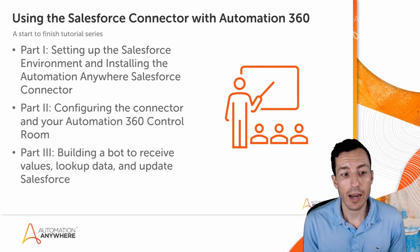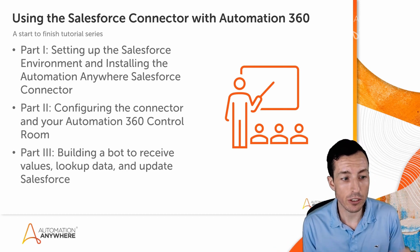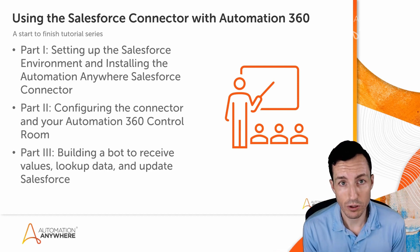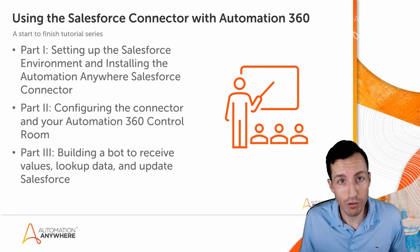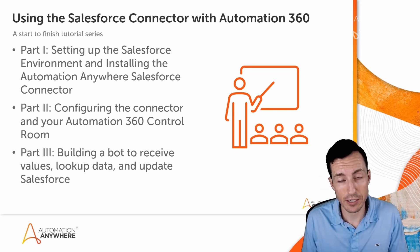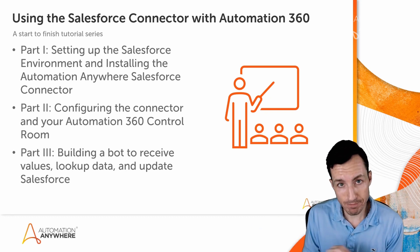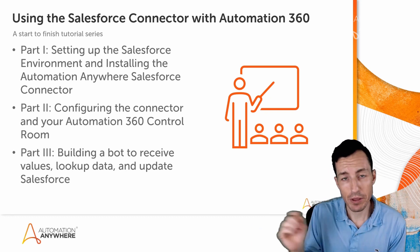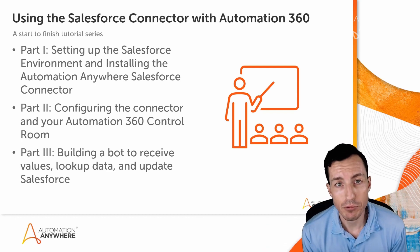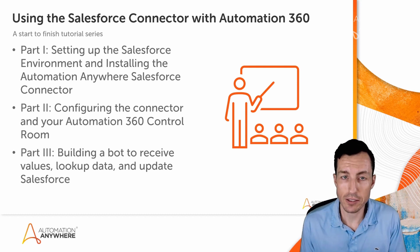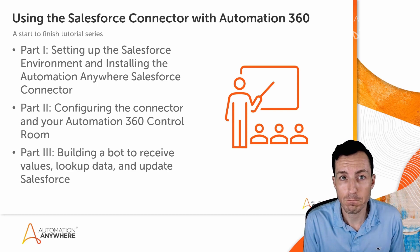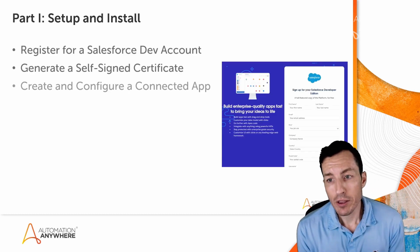The third part is the culmination of everything combined — we'll build a bot that receives values, does a lookup for data, and then updates data in Salesforce. We'll configure the bot on the Salesforce connector side, build the full bot, use a little dummy app for the lookup, read from it, update the Salesforce object on return, and then test everything from the Salesforce interface.